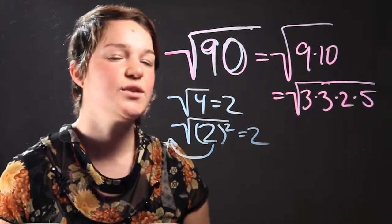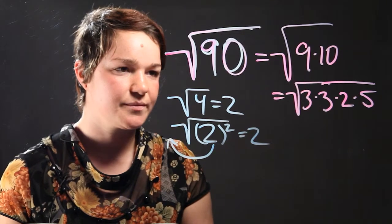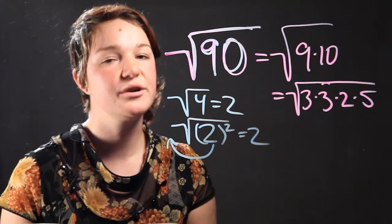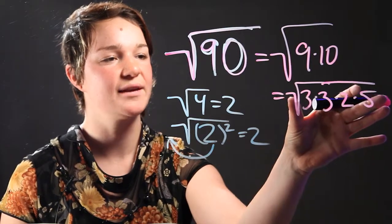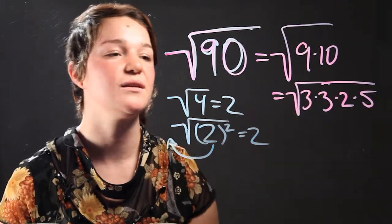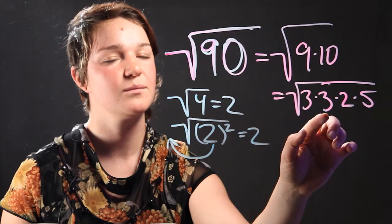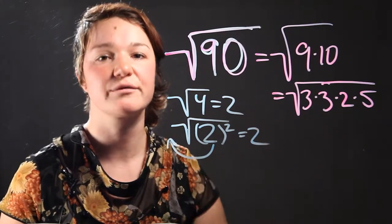So in order to simplify this long expression, we have to find perfect squares within the radicand. So this is the radicand, and a perfect square within it would be 3 times 3, because it's the same as 3 squared.